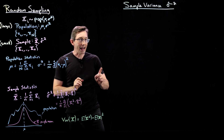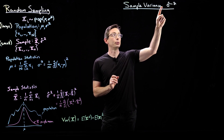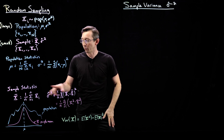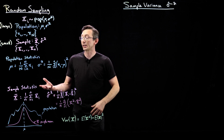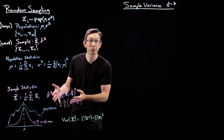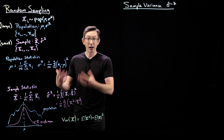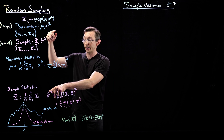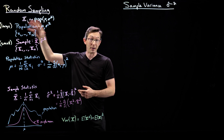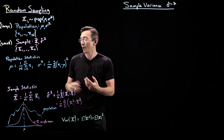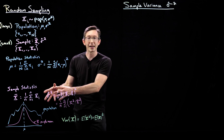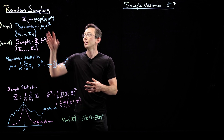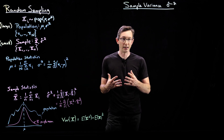But we haven't looked very much at the sample variance sigma hat squared — we don't really know where this comes into play. For example, does sigma hat squared also provide an estimate of some quantity we care about? Is sigma hat squared related to the population variance sigma squared? What else can this tell me about the variance of x-bar or the population variance?